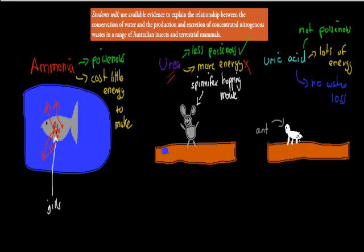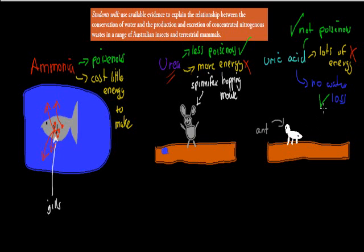Then we have the ant, which is an insect. Ants and birds produce uric acid. The advantage is that it's not poisonous at all and it costs no water loss to remove it — we don't have to urinate uric acid, so we don't lose water when we produce it. But the bad point is that it costs lots of energy to produce. An ant has very little access to water, so it has no real alternative — it has to produce something not poisonous that requires no water loss because it will hold on to it for quite some time. The uric acid sometimes gets stuck to its skin or skeleton, but that's fine because it's not poisonous. The more an organism needs to conserve water, the more it will use a form of nitrogenous waste that conserves water: urea conserves more water than ammonia, and uric acid conserves even more water than urea.